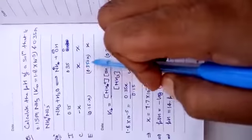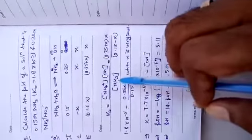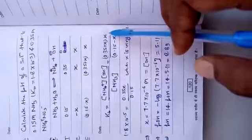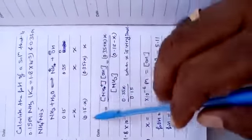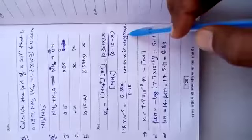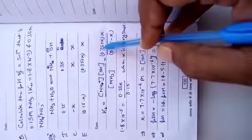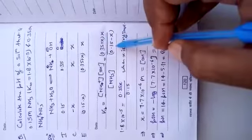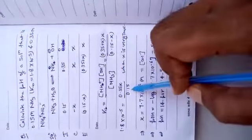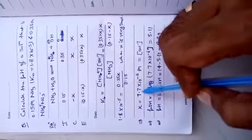Now what is the dissociation constant? Kb is equal to concentration of the product divided by concentration of the reactant. So after putting this value: 0.35 plus x multiplied by OH- concentration x divided by concentration of ammonia 0.15 minus x. Again, x is very very small, so 0.35 plus x will be treated as 0.35, and 0.15 minus x will be treated as 0.15 because of very small value of x. Now putting these values, we will find out the x value is 7.7 into 10 raised to the power minus 6 M.